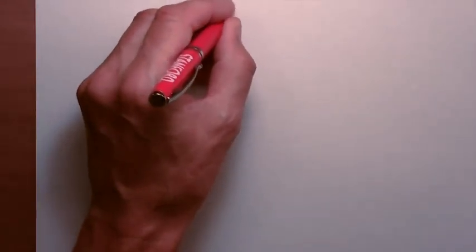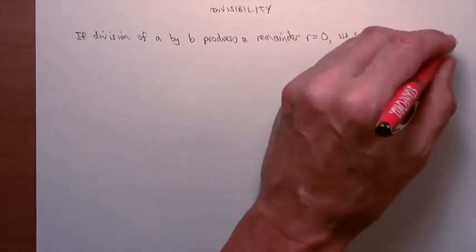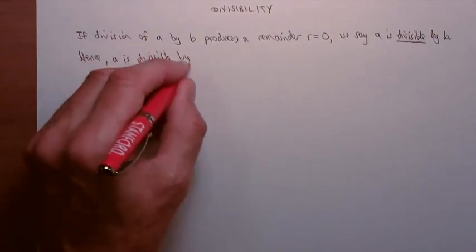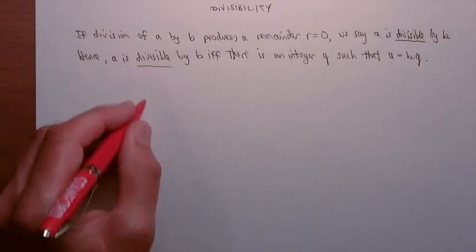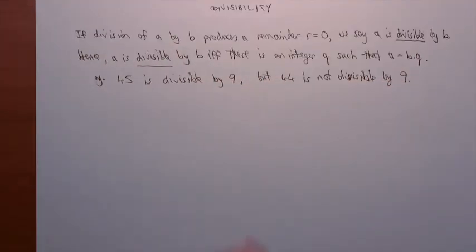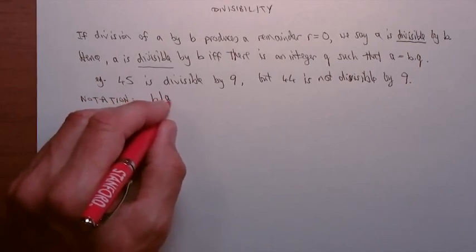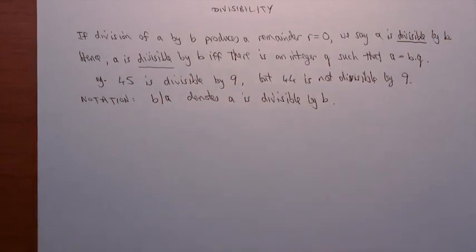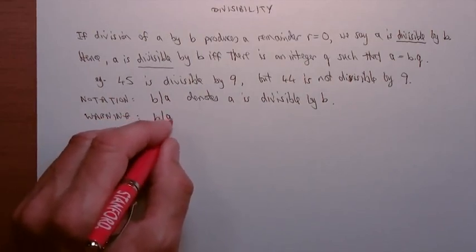Well, how about that? Well, now that we have the division theorem available, we can look at the important mathematical property of divisibility. If division of a by b produces a remainder r equal to zero, we say a is divisible by b. Hence, a is divisible by b if and only if there's an integer q, such that a equals bq. For example, 45 is divisible by 9, but 44 is not divisible by 9. The notation that we use for divisibility is this. b vertical line a denotes a is divisible by b. And let me give you a warning at this point.